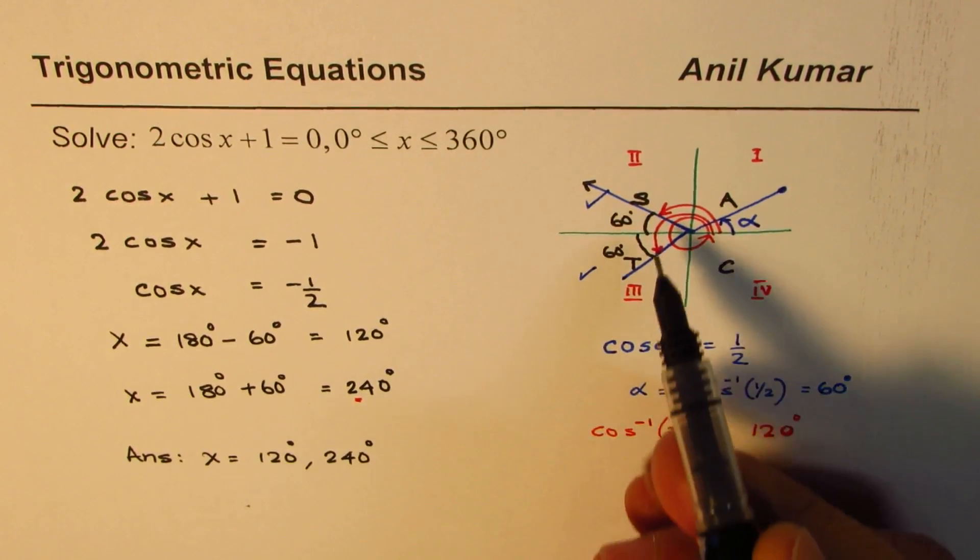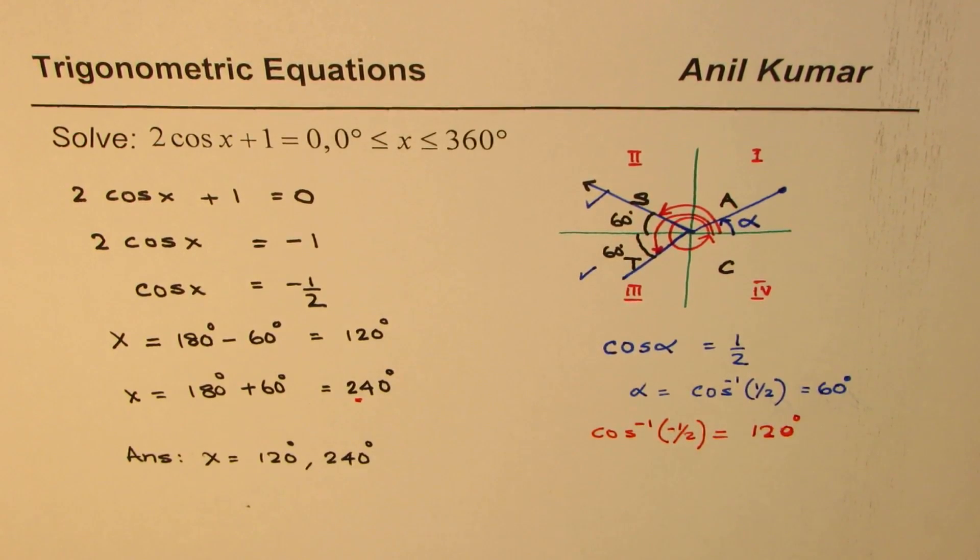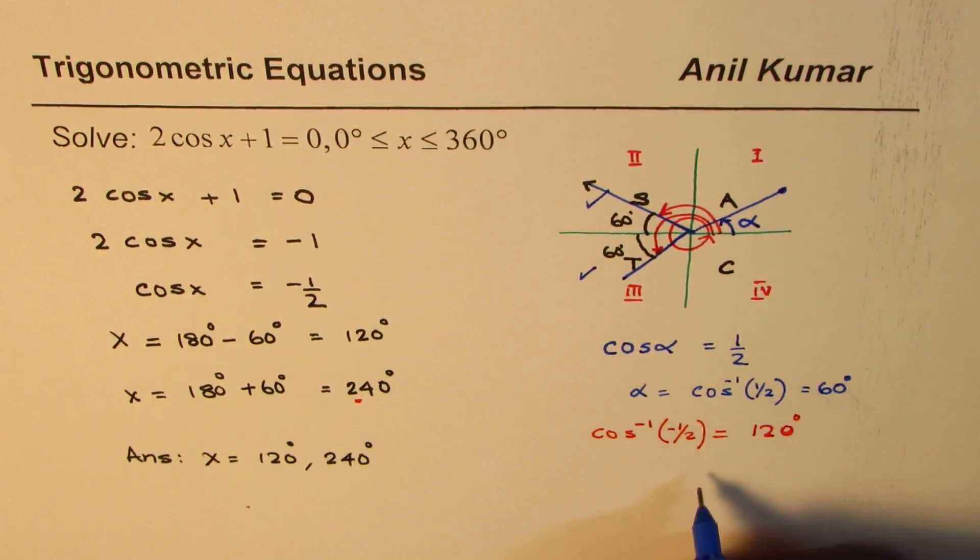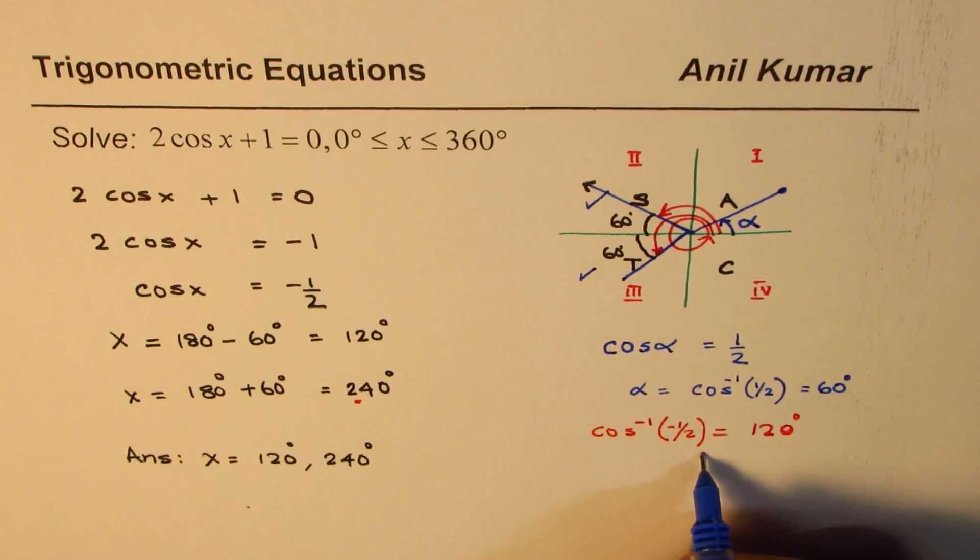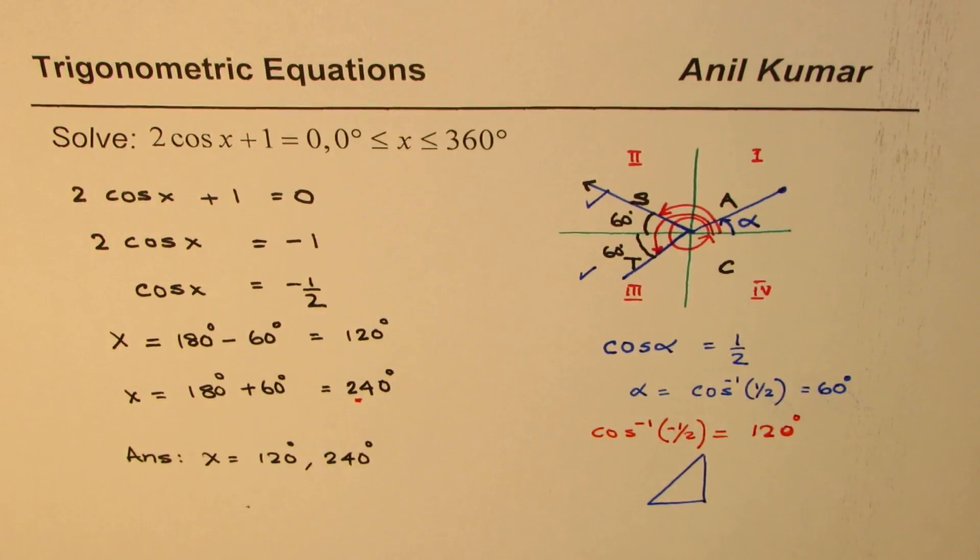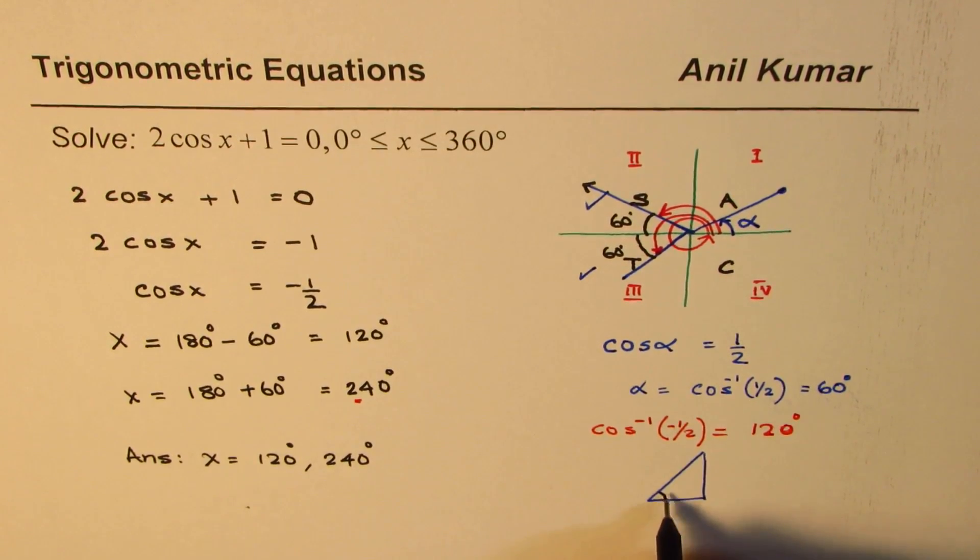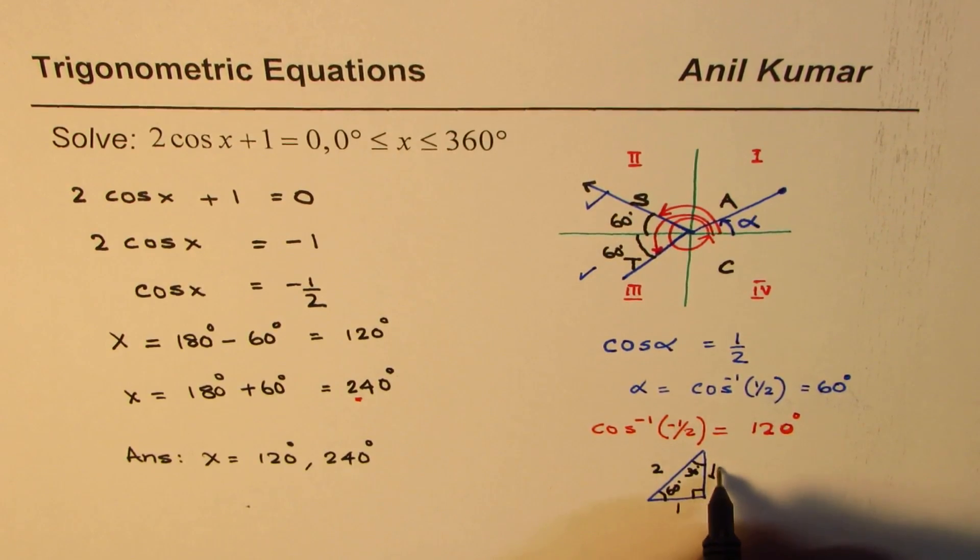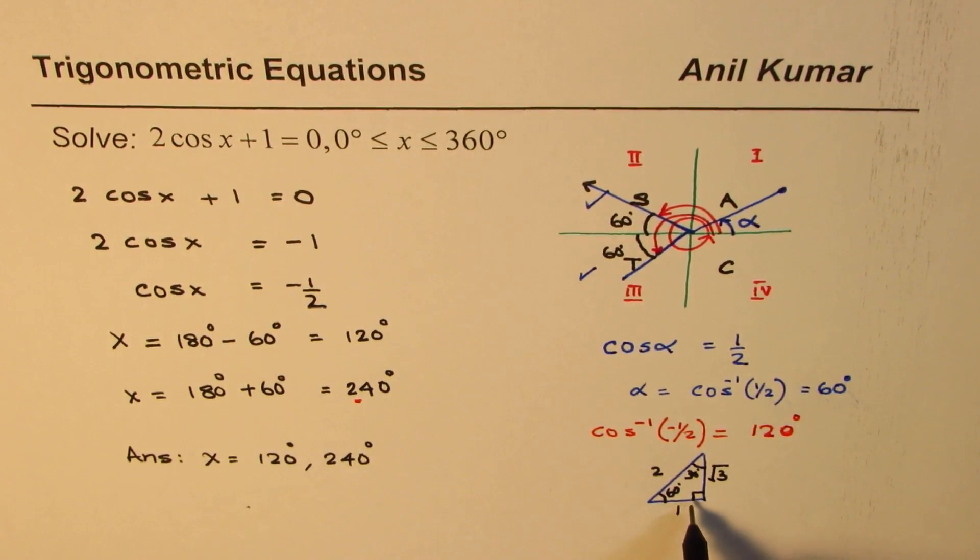Well, at times, instead of calculating, you can always use special triangles. Let me add that up here. So a triangle which gives you cos alpha value is half, is a triangle which is 30, 60, 90. Now in 30, 60, 90, this is 60 degrees. That is 90 degrees. That is 30 degrees. And the sides are 1, 2 and square root 3. So you could always use special triangles instead of calculator also to find the angle. So from here we could have got 60 degrees.